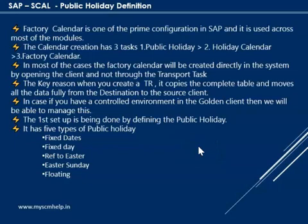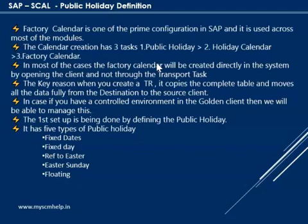The factory calendar is one of the prime configurations. It is used across all the modules. You create a factory calendar and attach it to a plant, to a shipping point, or even to a customer master. In production planning you attach it to a work center. So it is used in multiple places across many modules, including HR.